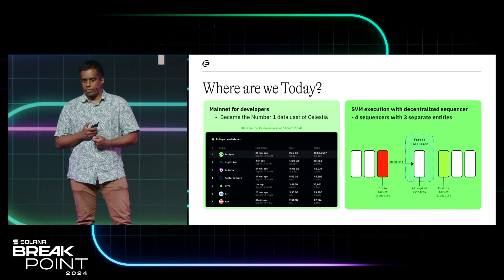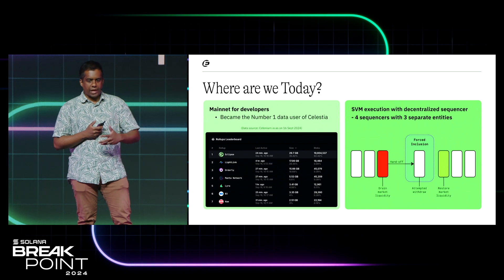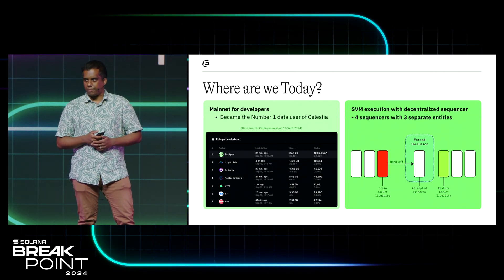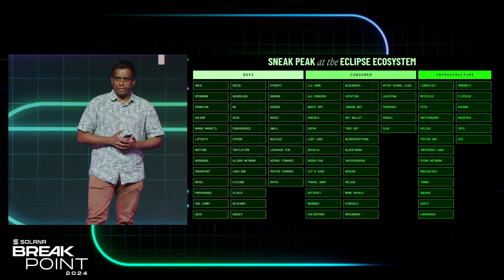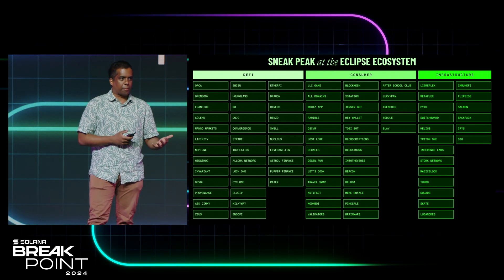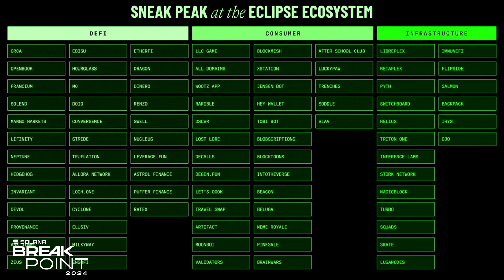We also have SVM execution with a decentralized sequencer — four sequencers with three separate entities, and we're building forced inclusion as well. This is a bit of a reveal we're doing today: a sneak peek at the Eclipse ecosystem. The three main verticals we're focused on right now are fully on-chain DeFi, particularly central limit order books and intent systems; consumer experiences, like gamified apps along the lines of Friend Tech; and infrastructure, including Oracle and wallet partners and RPCs.